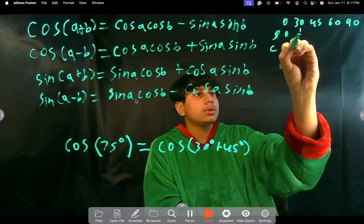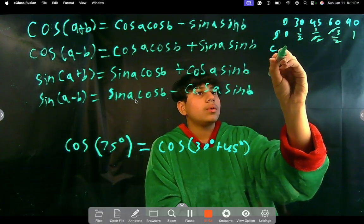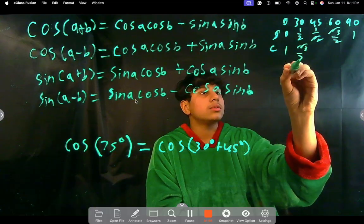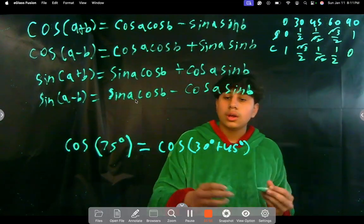So, it's 0, 1 half, root 2, root 3 over 2, 1. 1, root 3 over 2, 1 over 2, 1 over 2, and 0. So, here, it's just going to be cosine of a.